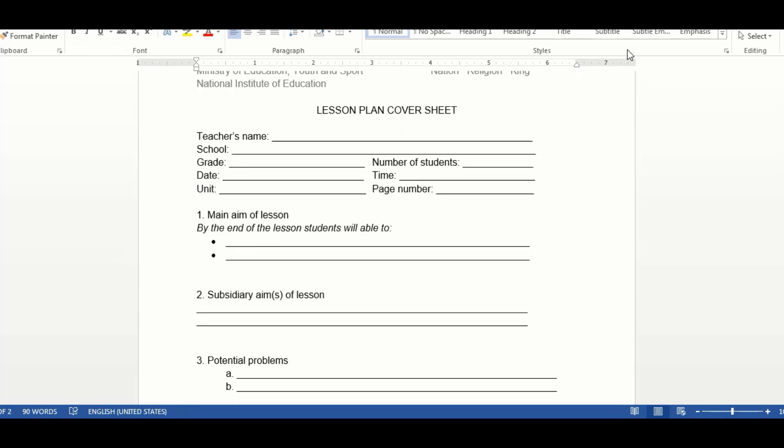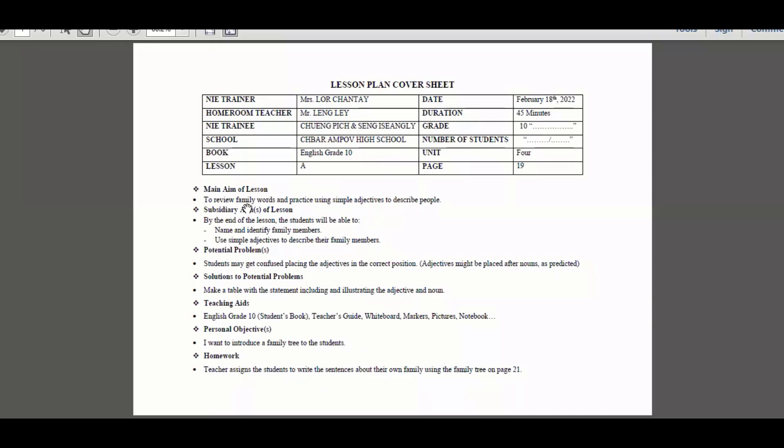Our new book has the aims and objectives given, so we better use those. I want to share my lesson plan I made here. This is the main aim I got from the teacher guide. We have the teacher guide, so you can use it for our benefit. To review family words and practice using simple adjectives to describe people - this is the main aim of the lesson, and here are the subsidiary aims.